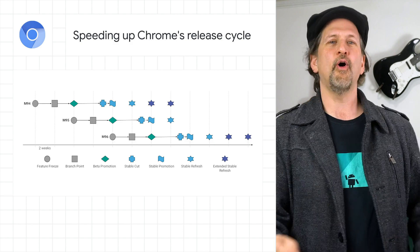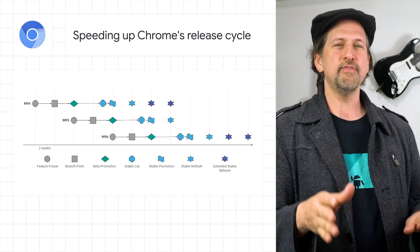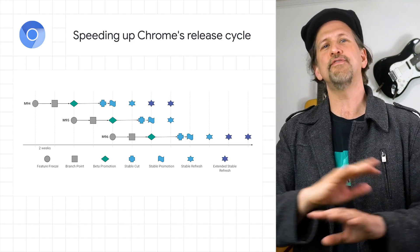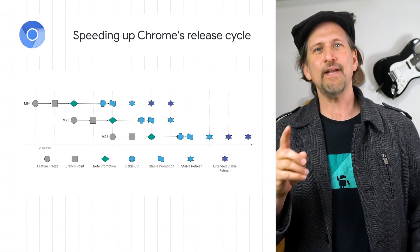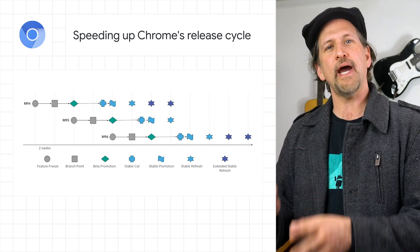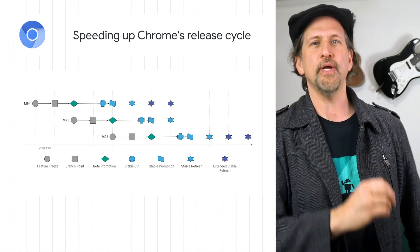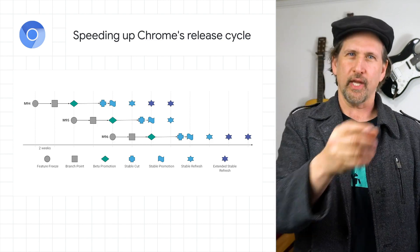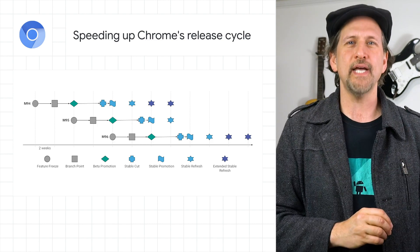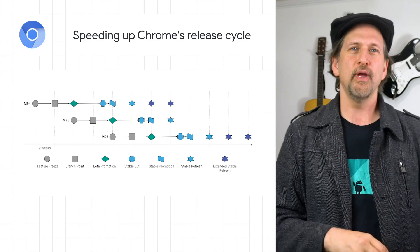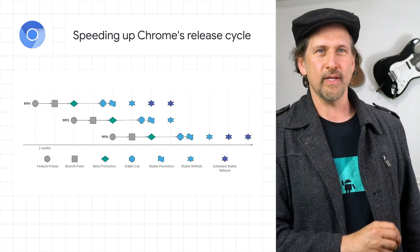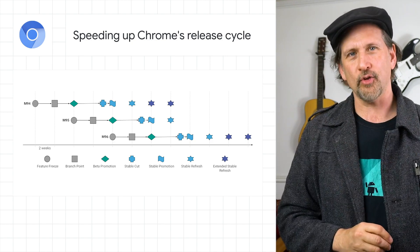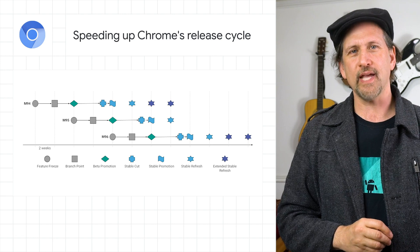We announced that Chrome is planning to move to releasing a new milestone every four weeks, instead of six weeks, starting with Chrome 94 in Q3 of 2021. Additionally, we will add a new extended stable option with milestone updates every eight weeks. Check out the post for all the details on our new release schedule.